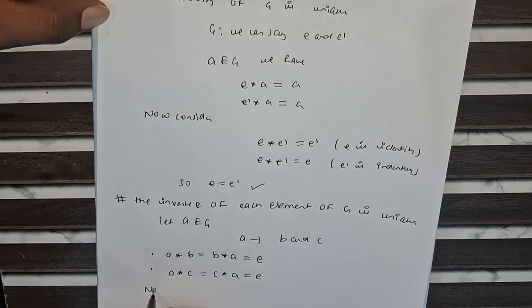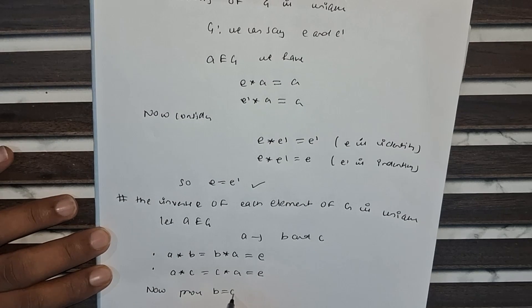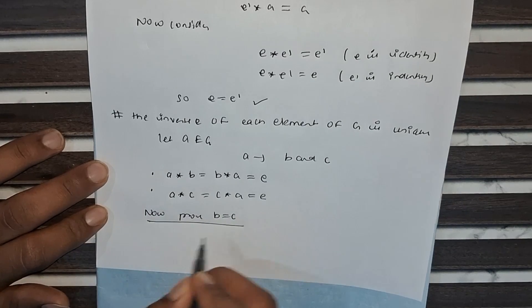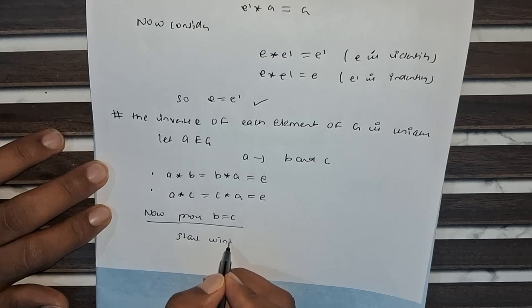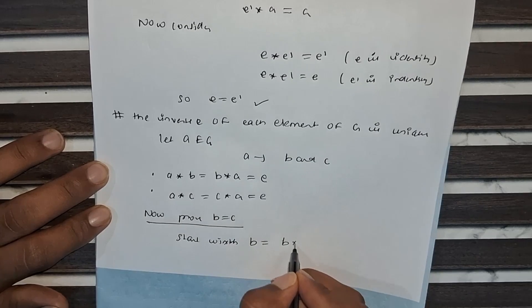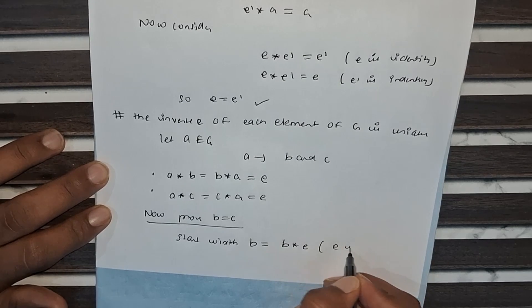Now prove B equals C. Start with B equals B times E, since E is identity.